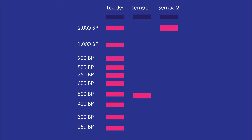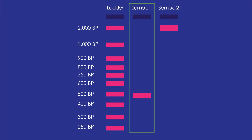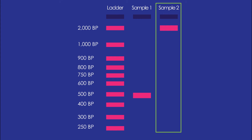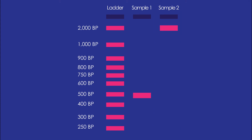So with that in mind, let's look at this illustration. Here we have a picture of a gel with three lanes. The first lane is just your DNA ladder, and then the next lane is sample one, and then the third lane is sample two. In sample one, you see a band that has traveled further down the gel, and then in sample two, the fragment hasn't traveled quite as far.